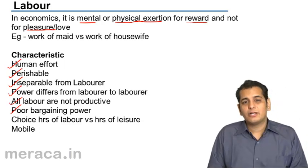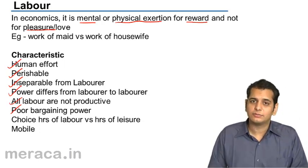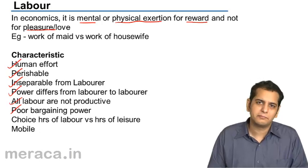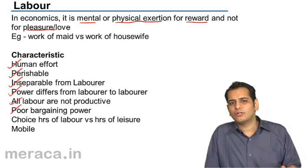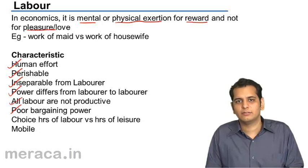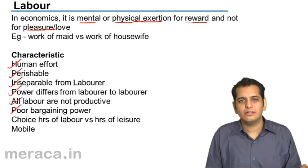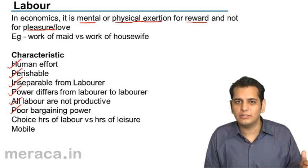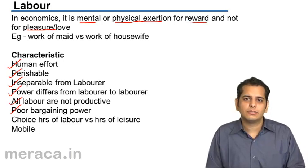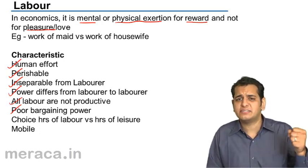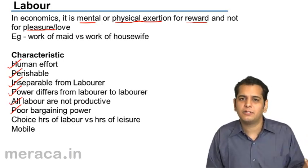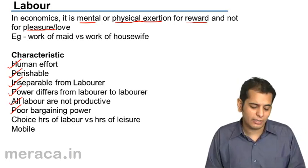A laborer has poor bargaining power. He does not have a good bargaining power because labor is economically weak. The person who employs labor is economically stronger, so the employer holds the bargaining power, whereas the laborer does not.